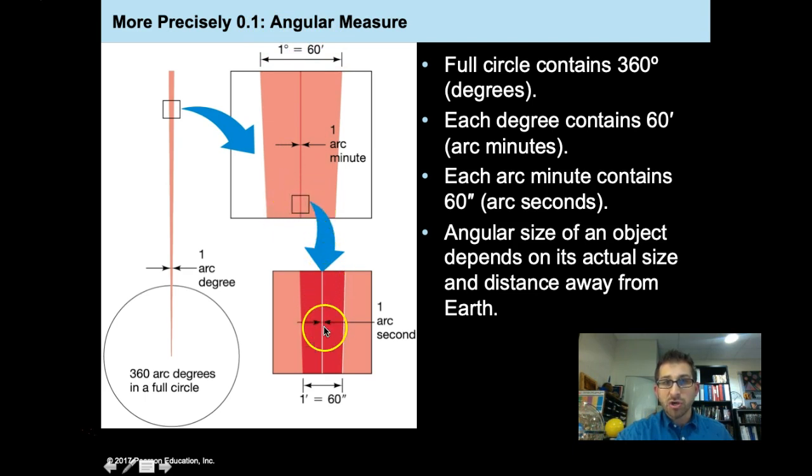That means that there are 3600 arc seconds in the width of your finger at arm's length. Now, most of the things in the night sky can be measured in such a way. Try it sometime. Go outside when the full moon is out, and you'll find that the full moon at arm's length is actually about half the width of your finger,